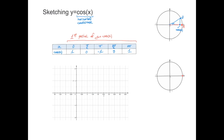Plotting these points: (0, 1), (π/2, 0), (π, −1), (3π/2, 0), and (2π, 1). With these blue points plotted, we can sketch the first period of y equals cosine of x by joining them in a smooth, wavy curve.